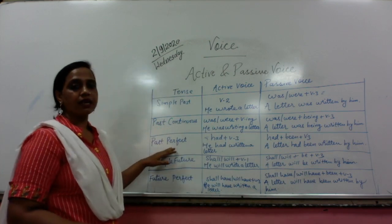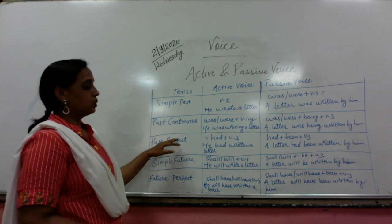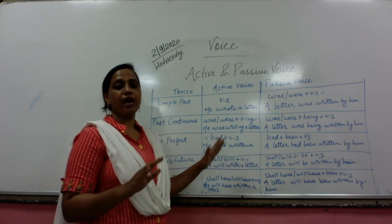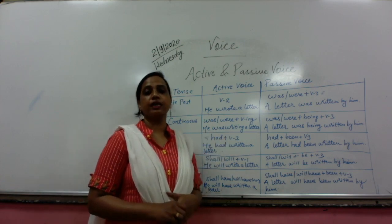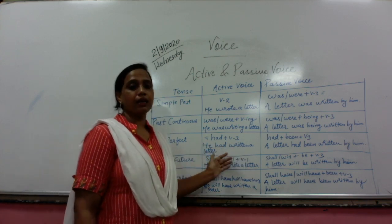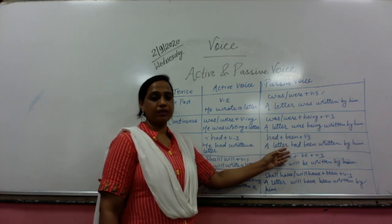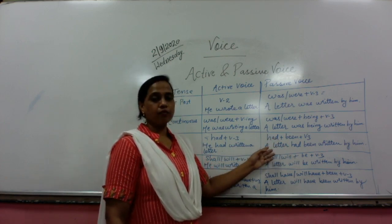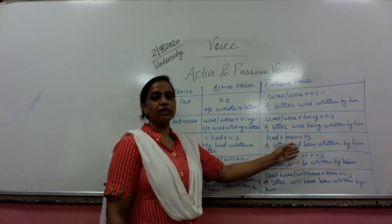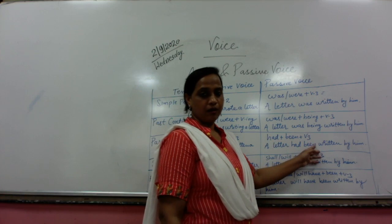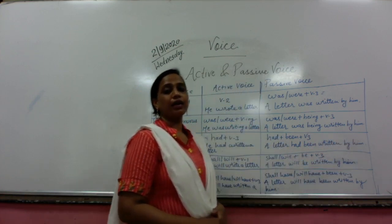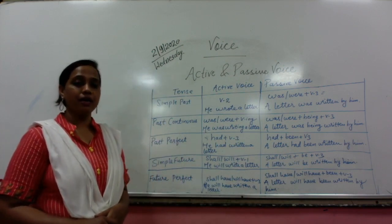For past perfect tense, after the subject the helping verb is 'had' and in perfect tense we always use past participle. For example: 'He had written a letter.' Change into passive voice — take the object ahead: 'A letter had been written by him.' 'Been' is added because it is perfect tense.